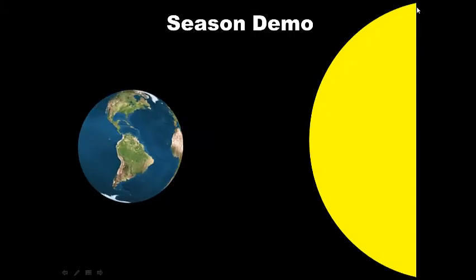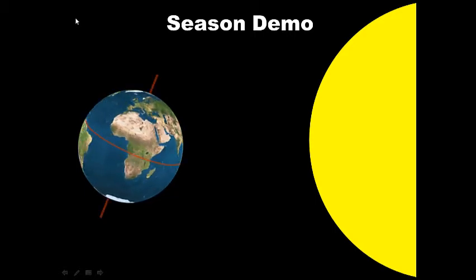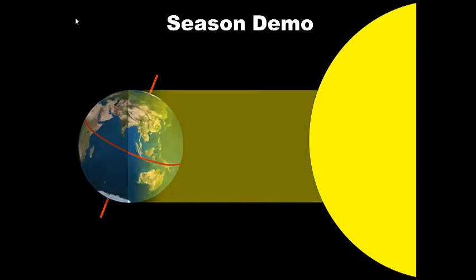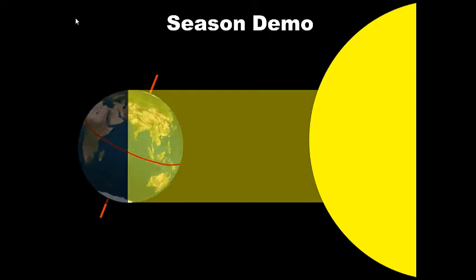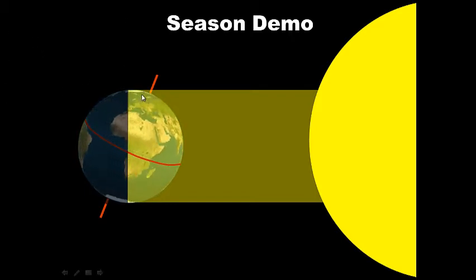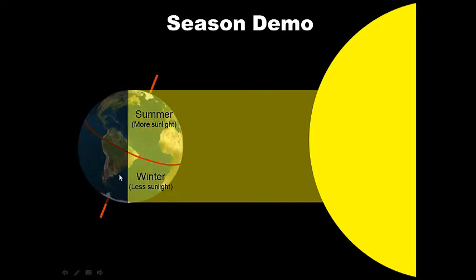Let's examine this further with a diagram. We have our sun and our Earth spinning — with an equator and north and south pole. Shining light on our Earth, what season is it in the northern hemisphere? Some parts are receiving 24 hours of sunlight. It is summer in the northern hemisphere — more sunlight — and winter in the southern hemisphere — less sunlight.